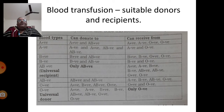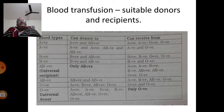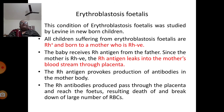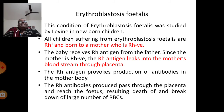O-negative is the universal donor, but can receive blood only from an O-negative person. This table gives a holistic idea regarding the compatibility and suitability of donors and recipients during blood transfusion. Erythroblastosis fetalis is a condition studied by Levin in newborn children.